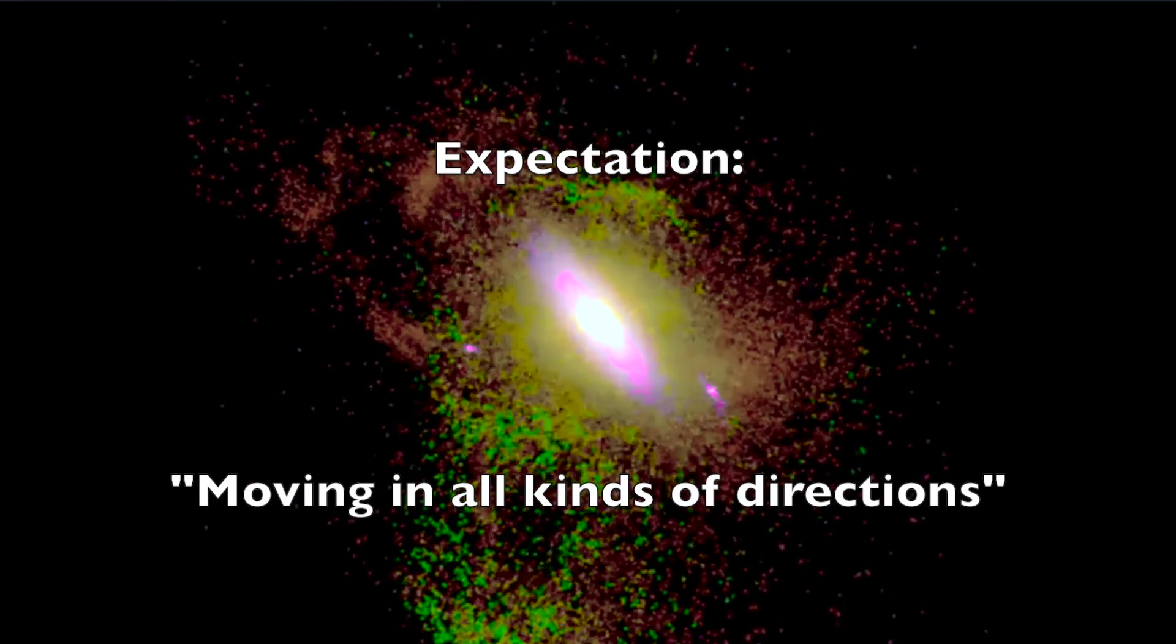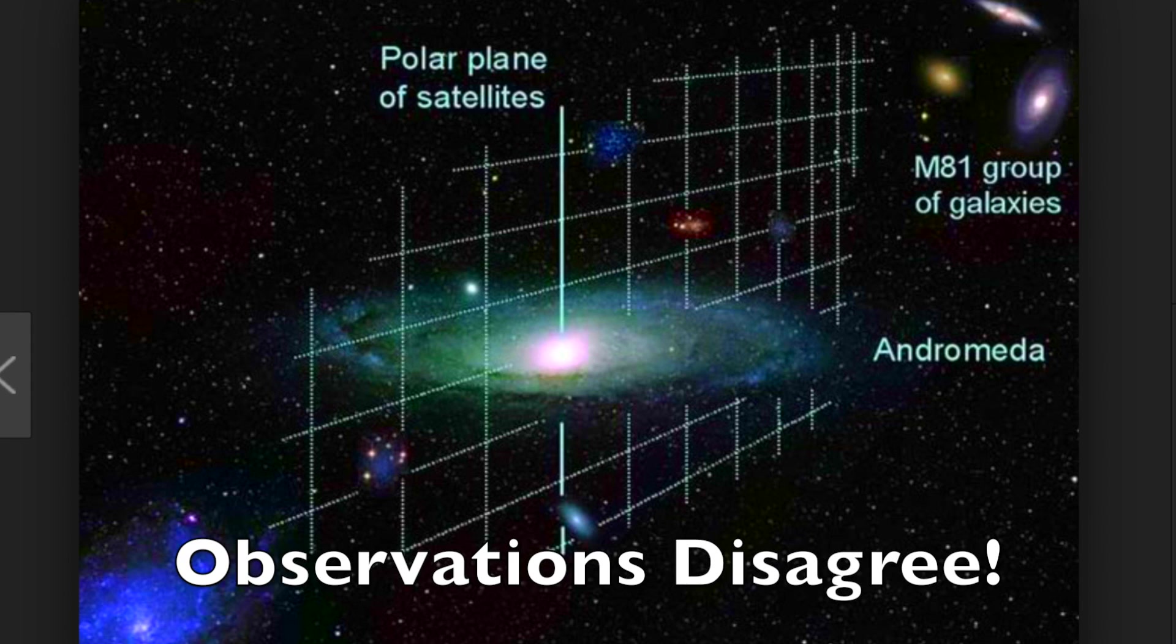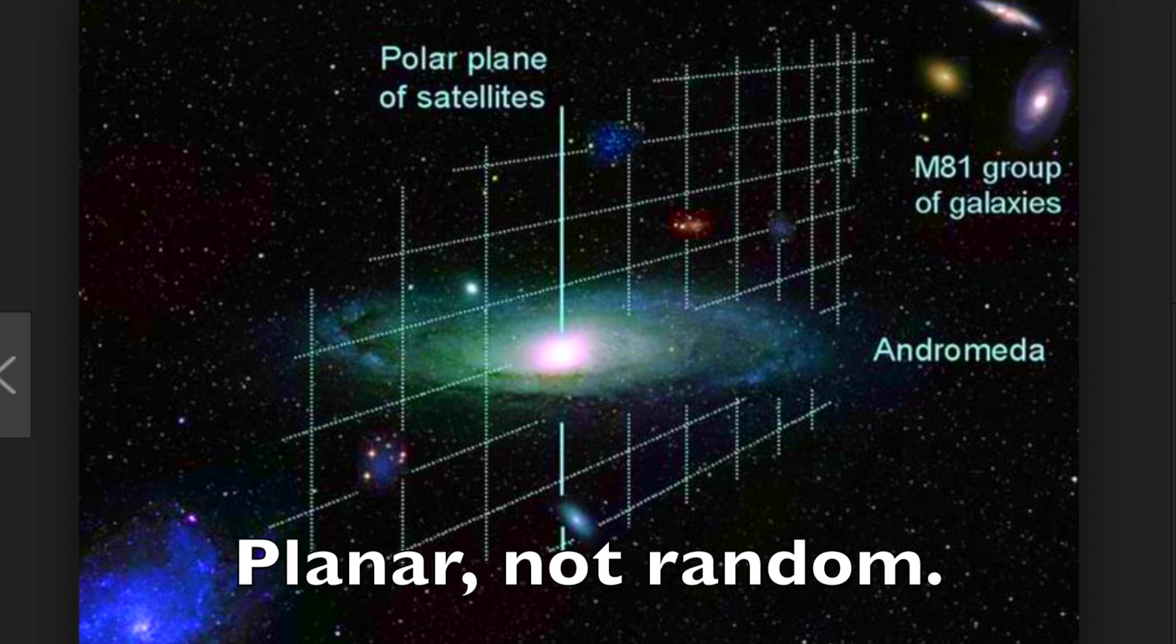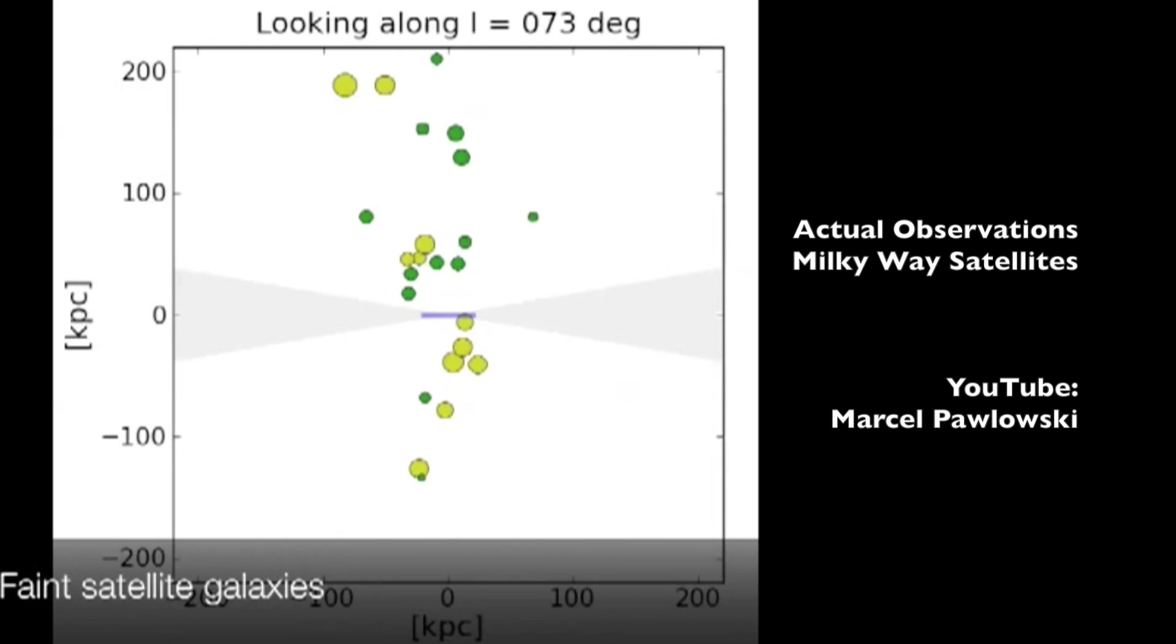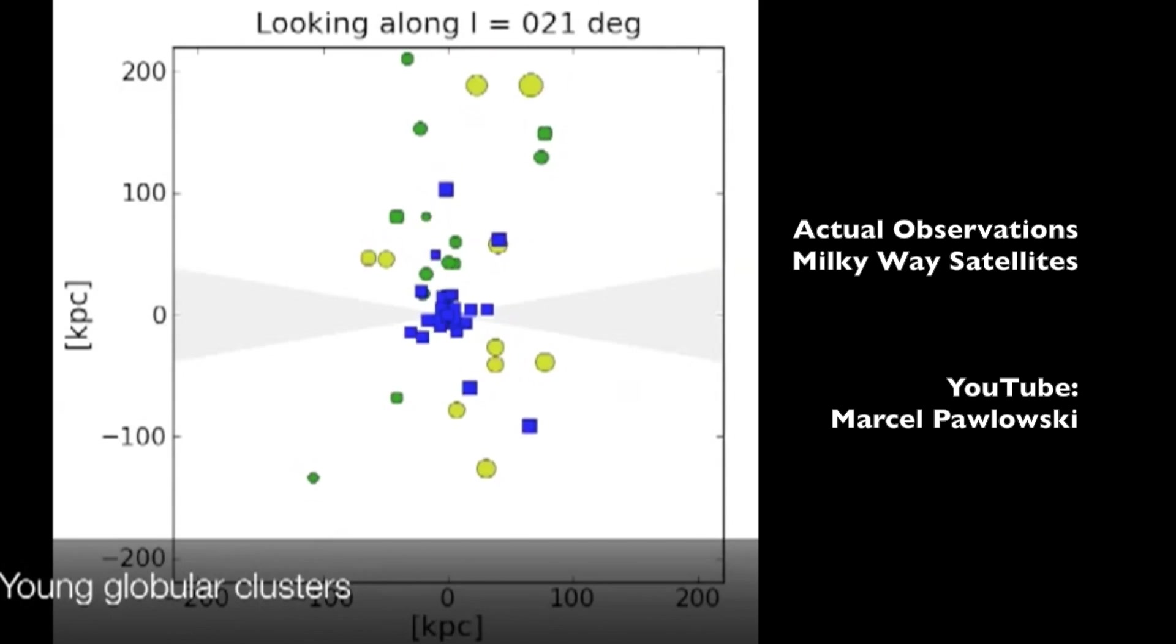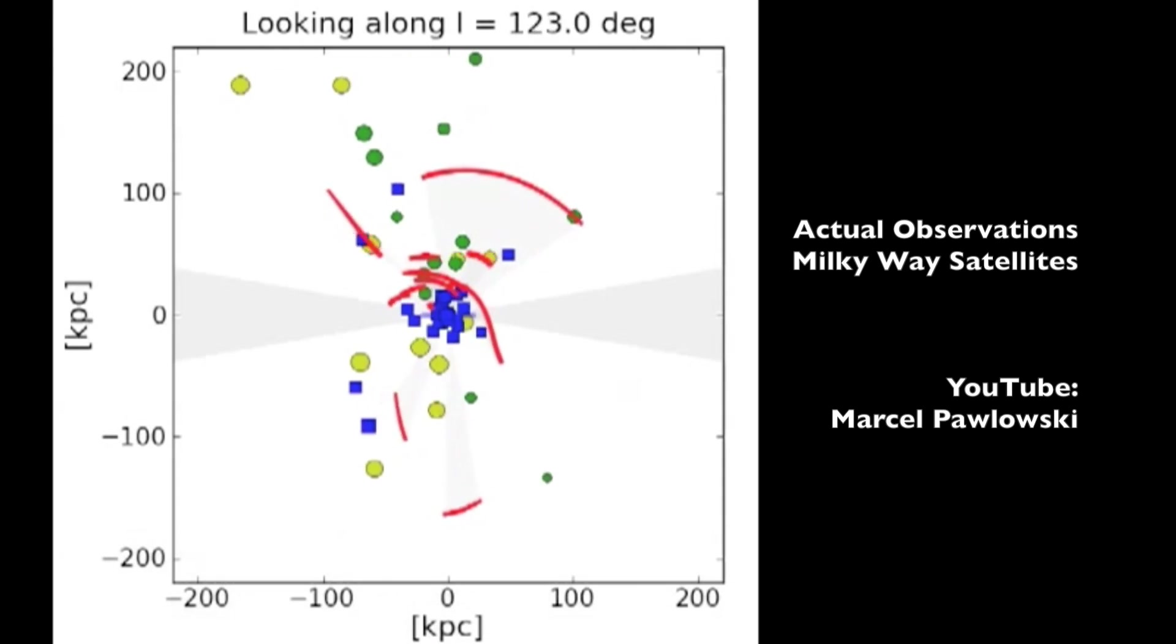Now if we look at the observed systems, we see that the satellite galaxies prefer to be aligned along planar distributions, so not spherical but more planar. In addition to that, they seem to move within those planes in a coherent fashion.